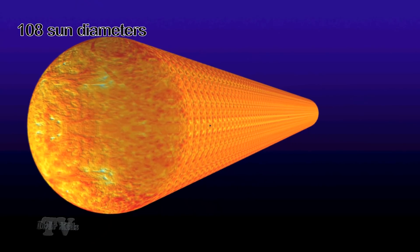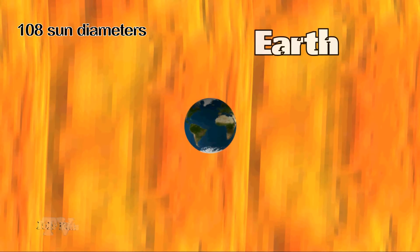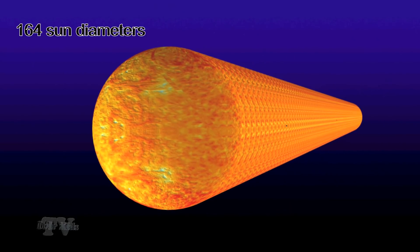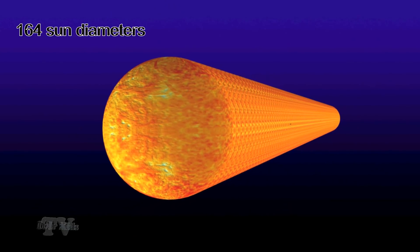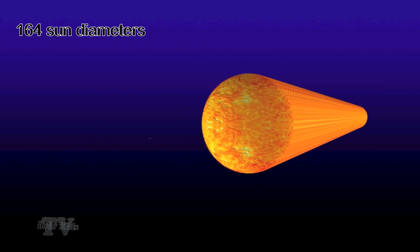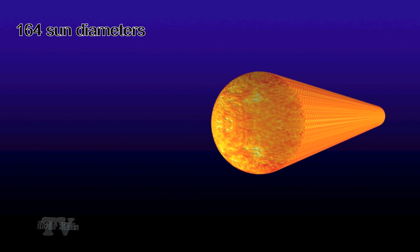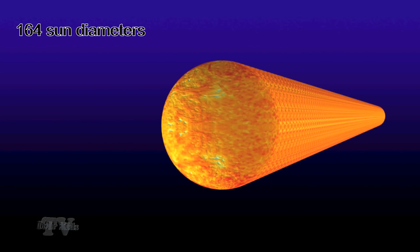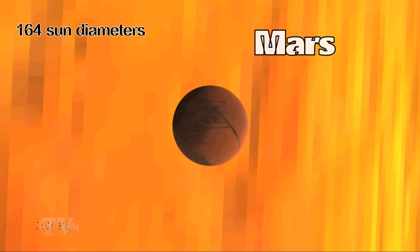The distance from the Sun to Earth is 108 diameters of the Sun. The distance from the Sun to Mars is 164 diameters of the Sun.